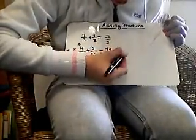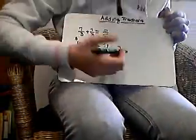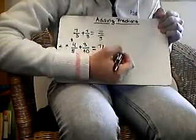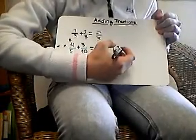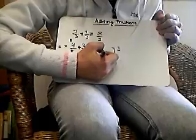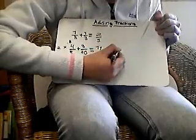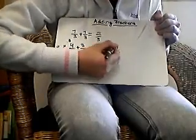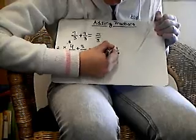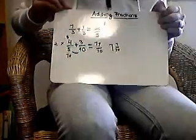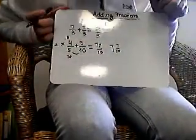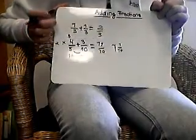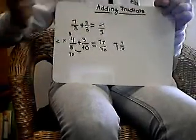So it's 1 whole and the remainder is 1. You write the 1 on top and you write the 10 down here. So it's 1 and 1 tenth. Thank you for listening.